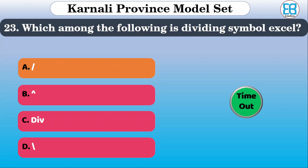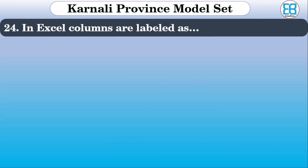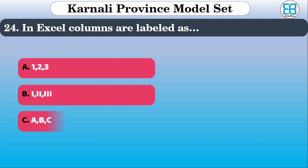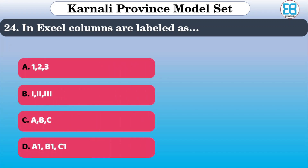In Excel, columns are labeled as what? The options are: 1, 2, 3; I, II, III; A, B, C; A1, B1, C1. The correct option is A, B, C.